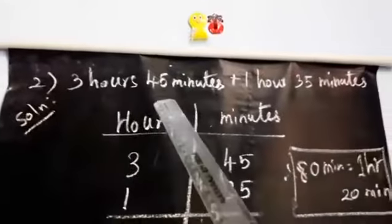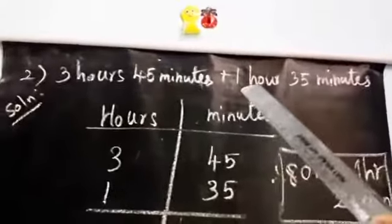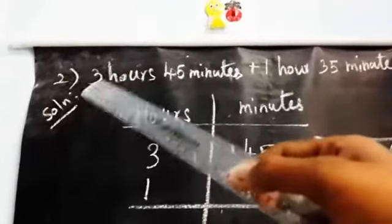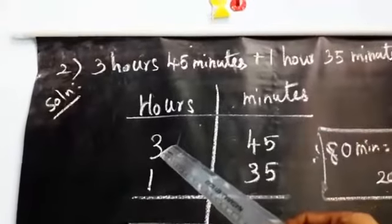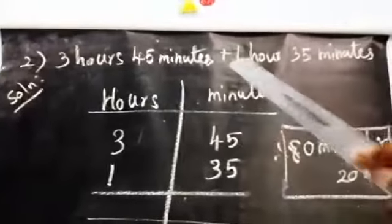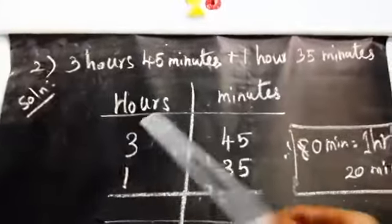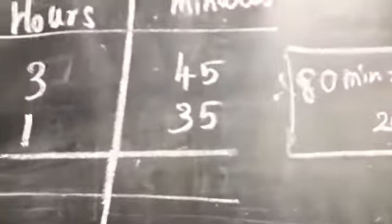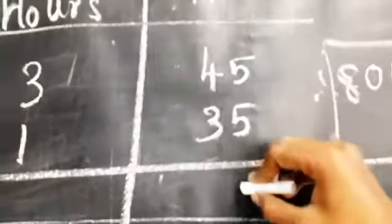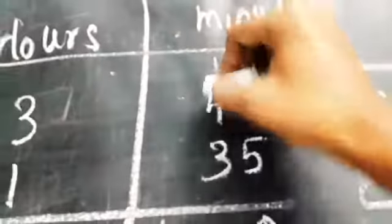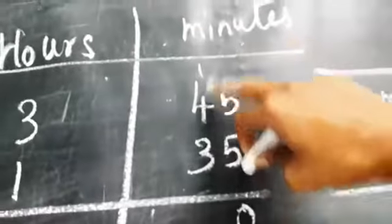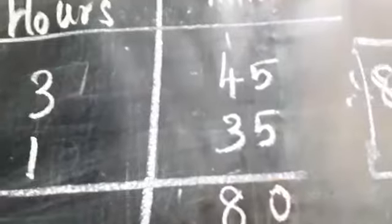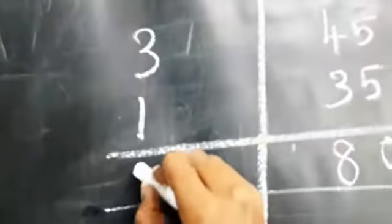Second sum: 3 hours 45 minutes plus 1 hour 35 minutes. Write 3 hours 45 minutes, then 1 hour 35 minutes below. Add the minutes: 5 plus 5 equals 10, write 0 and carry 1. Then 4 plus 1 equals 5, plus 3 equals 8. So the minutes total is 80.